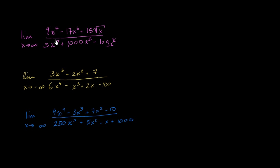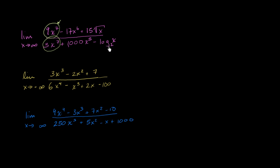In the numerator, out of these three terms, the 9x to the 7th is going to grow much faster than any of the other terms. So this is the dominating term in the numerator. In the denominator, 3x to the 7th is going to grow much faster than the x to the 5th term, and definitely much faster than the log base 2 term.